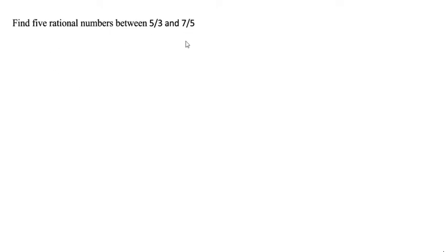Today we will learn rational numbers. In this, given 5 by 3 comma 7 by 5. In between we have to calculate 5 rational numbers.